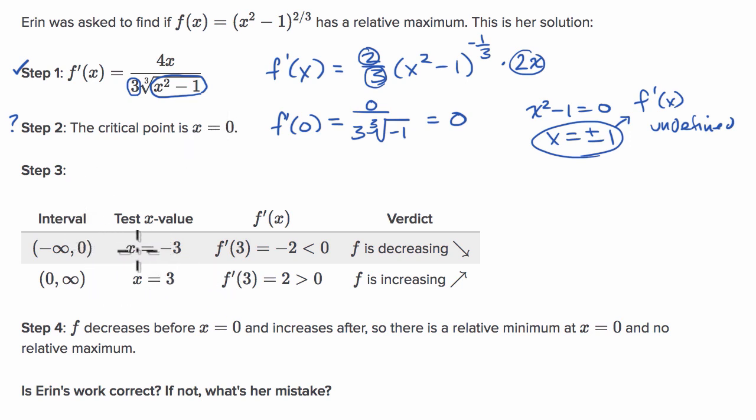Well, it is indeed in step three that she's testing, she's trying to test values on either side of the critical point that she, that the one critical point that she identified. But the problem here, the reason why this is a little shady.